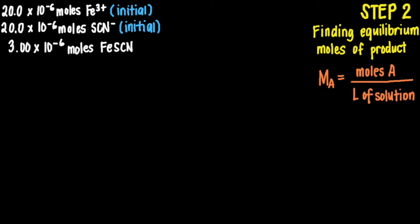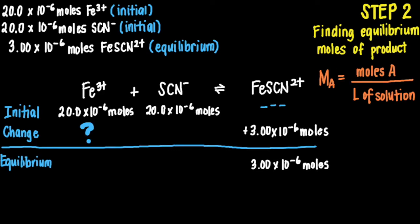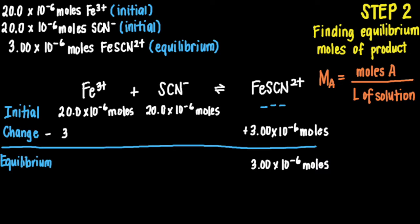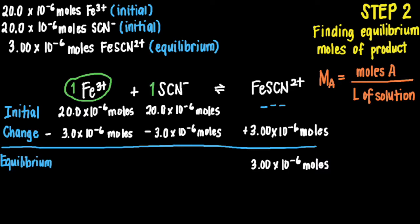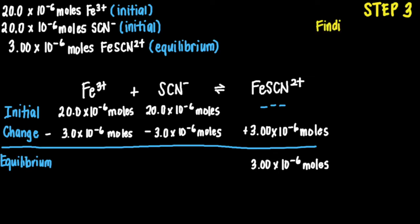At equilibrium, we have 3×10⁻⁶ moles of the product iron-3-thiocyanate ion. This means the number of moles of iron-3-ion and thiocyanate ion used up in producing this product must also each equal 3×10⁻⁶ moles, since according to our chemical equation it takes 1 mole of iron-3-ion and 1 mole of thiocyanate ion to make each mole of iron-3-thiocyanate ion. So for Step 3, we find the remaining moles of our reactants at equilibrium.